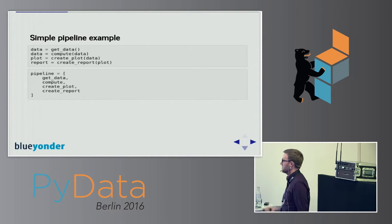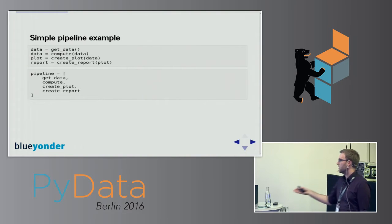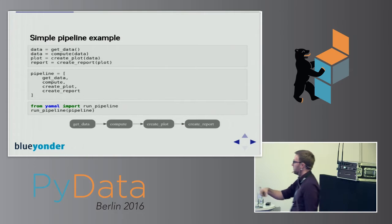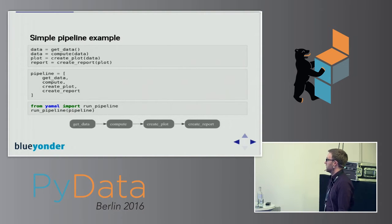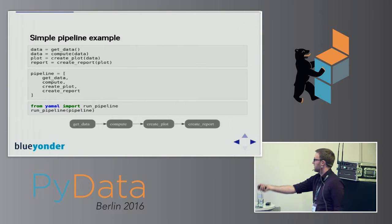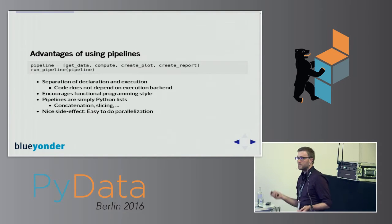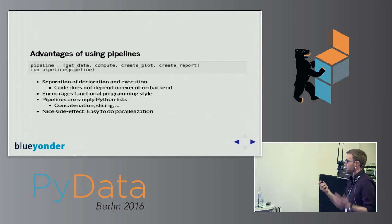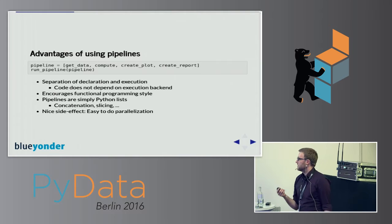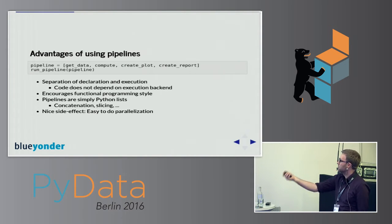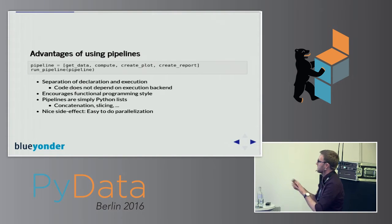If we take this list — this pipeline — we can execute it. Just execute the first function, take the output, feed it to the next function and so on until you get your result. We have this function called runPipeline, and we put our pipeline into that function. One of the nice things is that we have a clear separation of the declaration and the execution of the pipeline, meaning the actual code does not depend on the backend. So we can switch backends very easily.